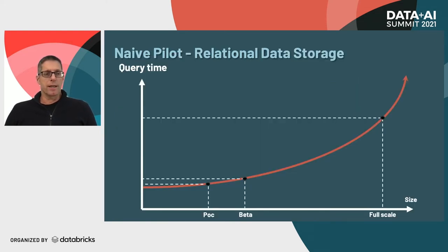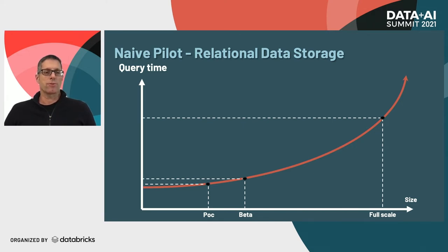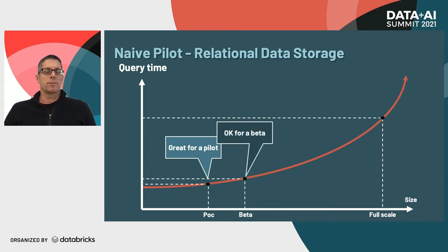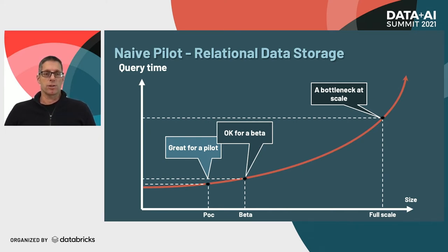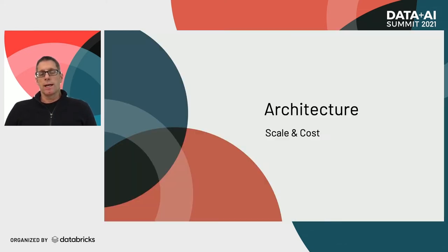We started a pilot with a naive architecture built on a Postgres relational data store. This was quick and easy to get started and we could learn a lot about user needs — great for a POC and a beta. But it started to become a bottleneck at scale for two reasons: scaling up with lots of data and queries on the relational database caused slowdowns, and a relational database is not very cheap — as you store more data and need to enlarge it, it costs more money. So we re-architected the system to achieve scale and very low cost.